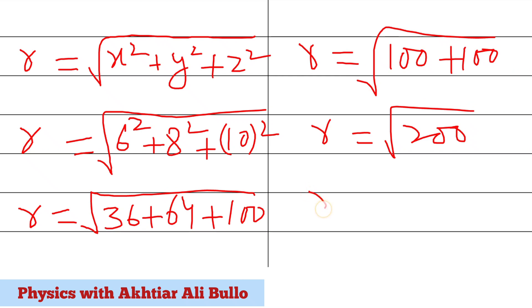We can also write it as √(100×2). The square root of 100 is 10.